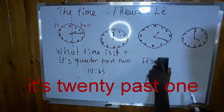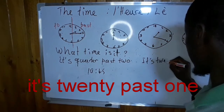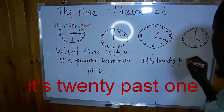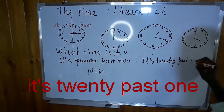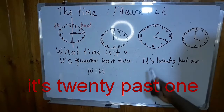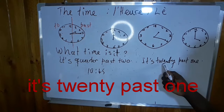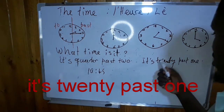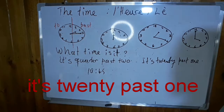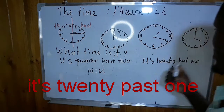It's 20 past one. So when you have 20 minutes past 1, we say it's 20 past one. It's 20 past one.